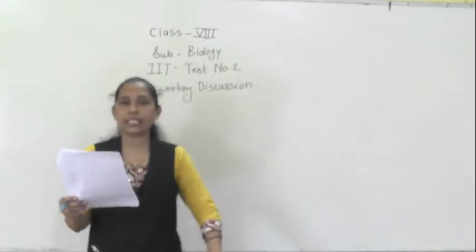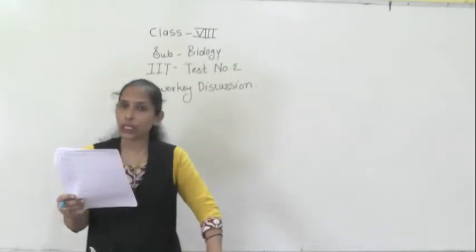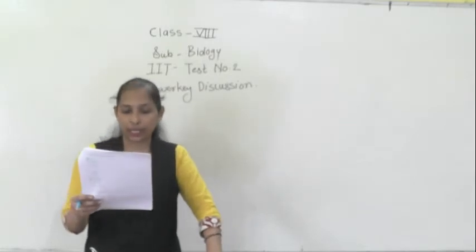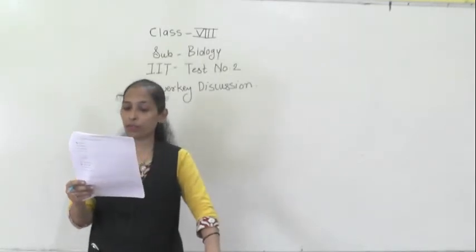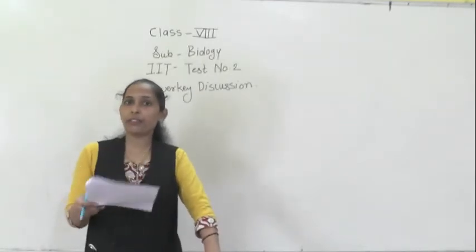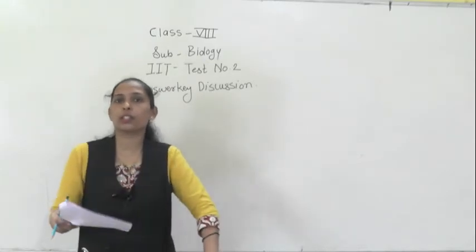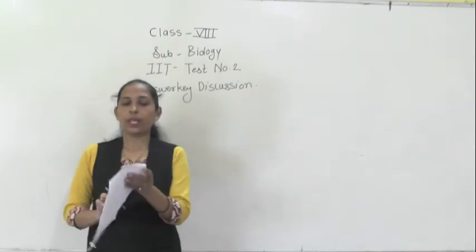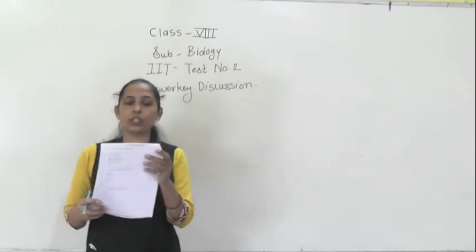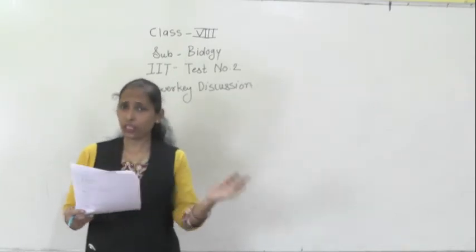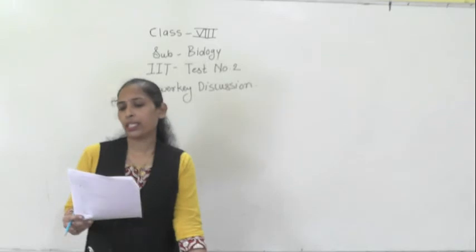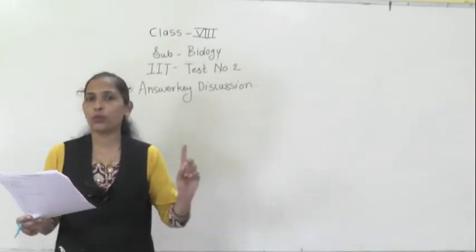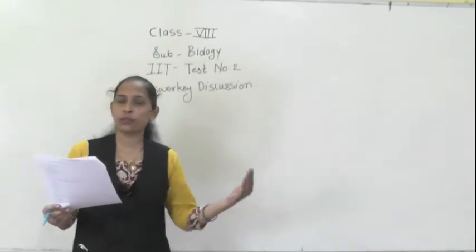Question number eight: plant cell wall is mainly composed of cellulose. Question number nine: the functional and structural unit of life is called a cell — it is the structural and functional unit of a living organism. Question number ten: single-celled organisms are called unicellular organisms.